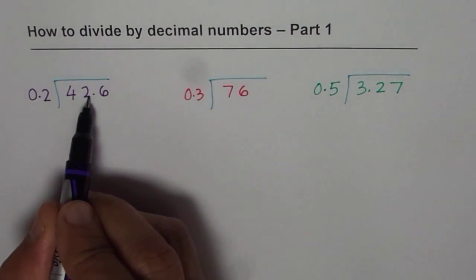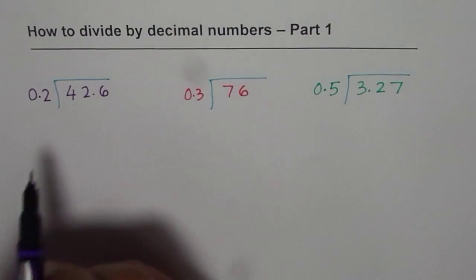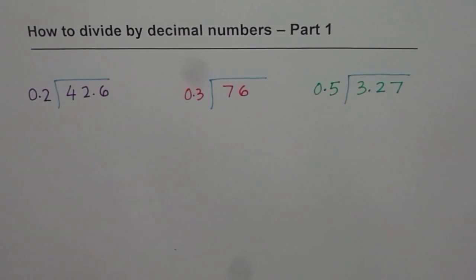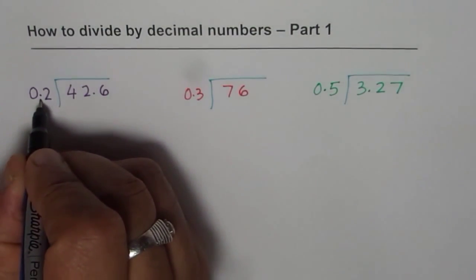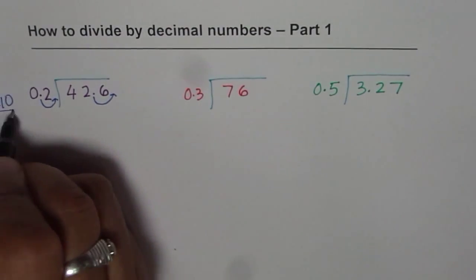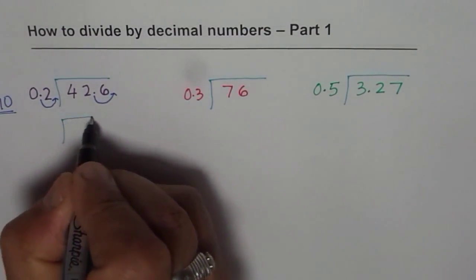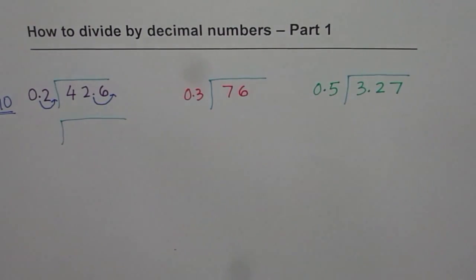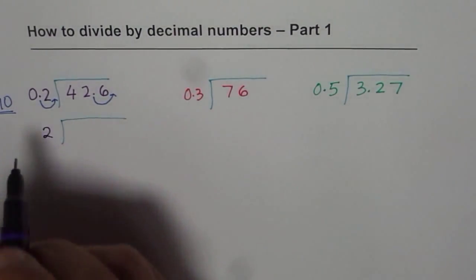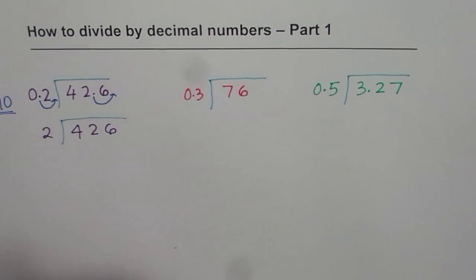We can multiply both numerator and denominator, in this case 0.2 and 42.6, by 10. If we do that, then what happens? If you multiply both by 10, the decimal moves one unit to the right. So what we did in this case was that we times it by 10. If you times both by 10, then it gives you the same answer. Dividing both by 10 does not change the question. But the idea here is to rewrite the question by removing the decimal from the divisor. So what we get here is 2. So move decimal one place in both. Then we get 2 divides into 426.